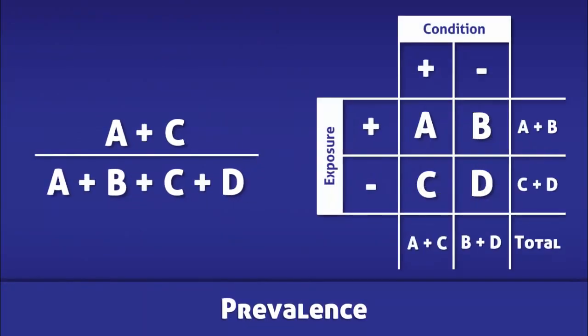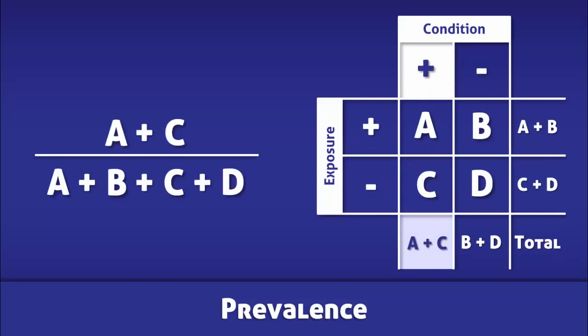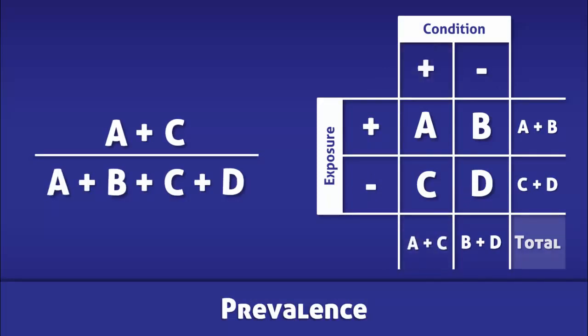Once more, prevalence is calculated by dividing the number of people with the condition by the total number of people in the population.